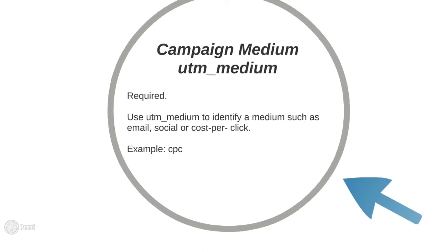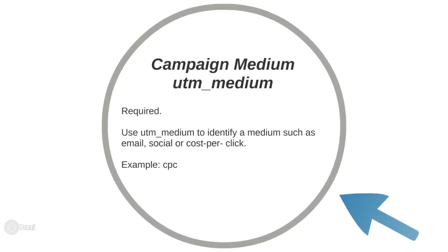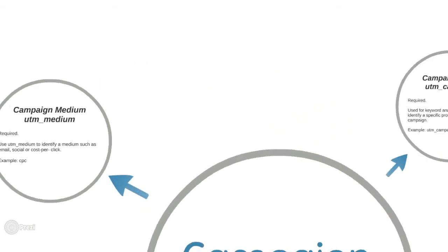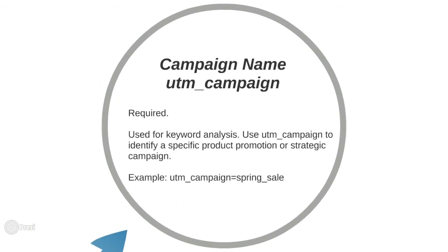The next is campaign medium. Remember, medium is always bigger than the source. If the source is Facebook, medium is social. If the source is Bing, medium could be organic. If the source is Quora, medium could be referral. Then you have campaign name, which could be a specific product promotion or a strategic campaign, or it could simply be used to easily identify your campaigns in Google Analytics reports.